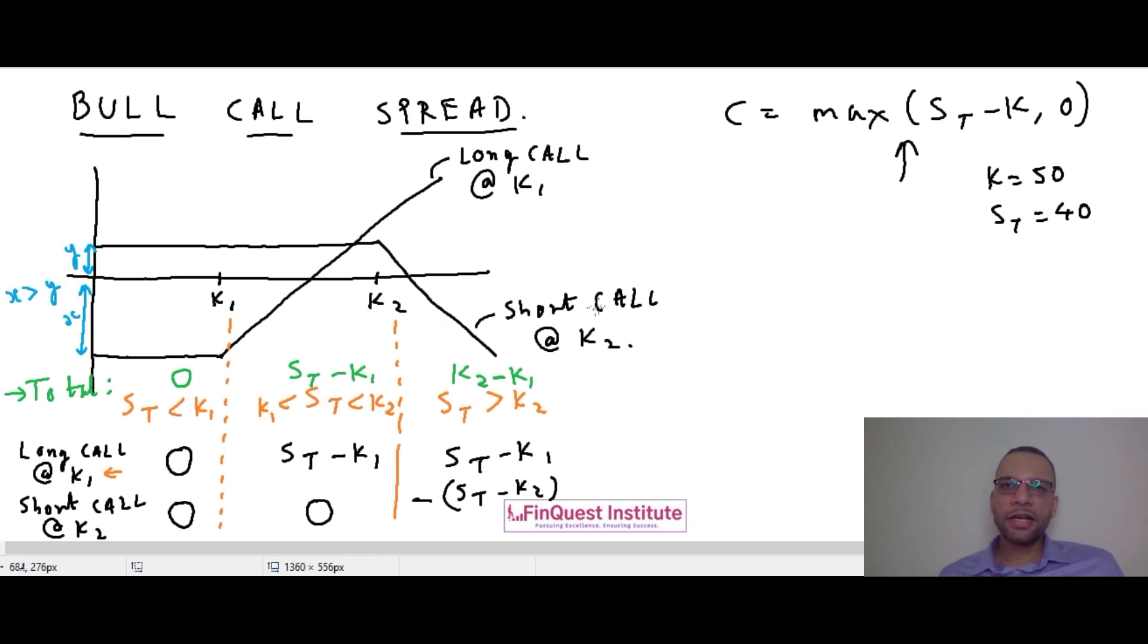The main rationale to enter into this strategy is whenever we expect the market to rise in the near term, then traders may go in for a bull call spread so that they can capitalize on the rising market such that the call which has been purchased at K1 may yield a positive payoff.